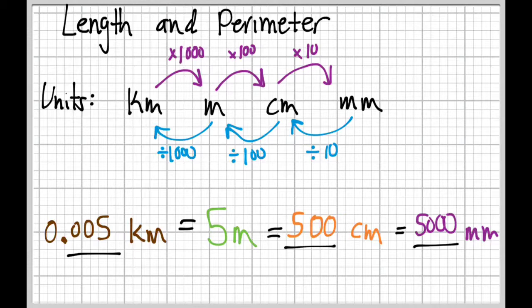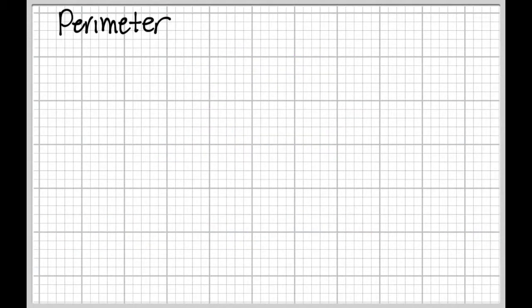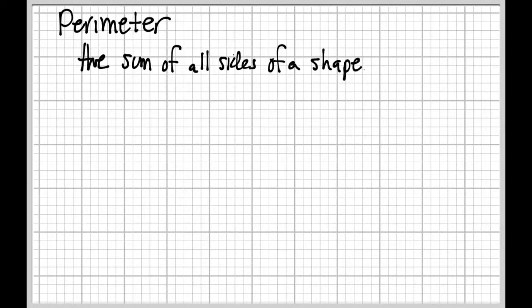Okay, so that's length. Let's talk about perimeter. The perimeter of an object is the sum of all its sides — the sum of all the sides of a shape. That's what the perimeter is. People like to say the distance around a shape, but that's a little bit vague, because we're talking about the actual sides. If you're walking right along the sides, running your finger along the edges of a shape — how far would that be?